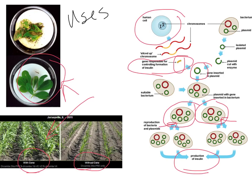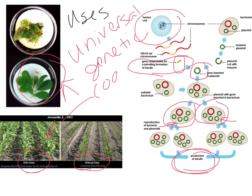This is possible because of the universal genetic code. All organisms use the same nitrogen bases — A, T, C, and G. All organisms use those same bases, and the codons code for the same amino acids no matter what organism they're found in. For example, if ATA codes for alanine in a plant, it codes for alanine in bacteria and in a human cell too. That's why recombinant DNA can be successful.